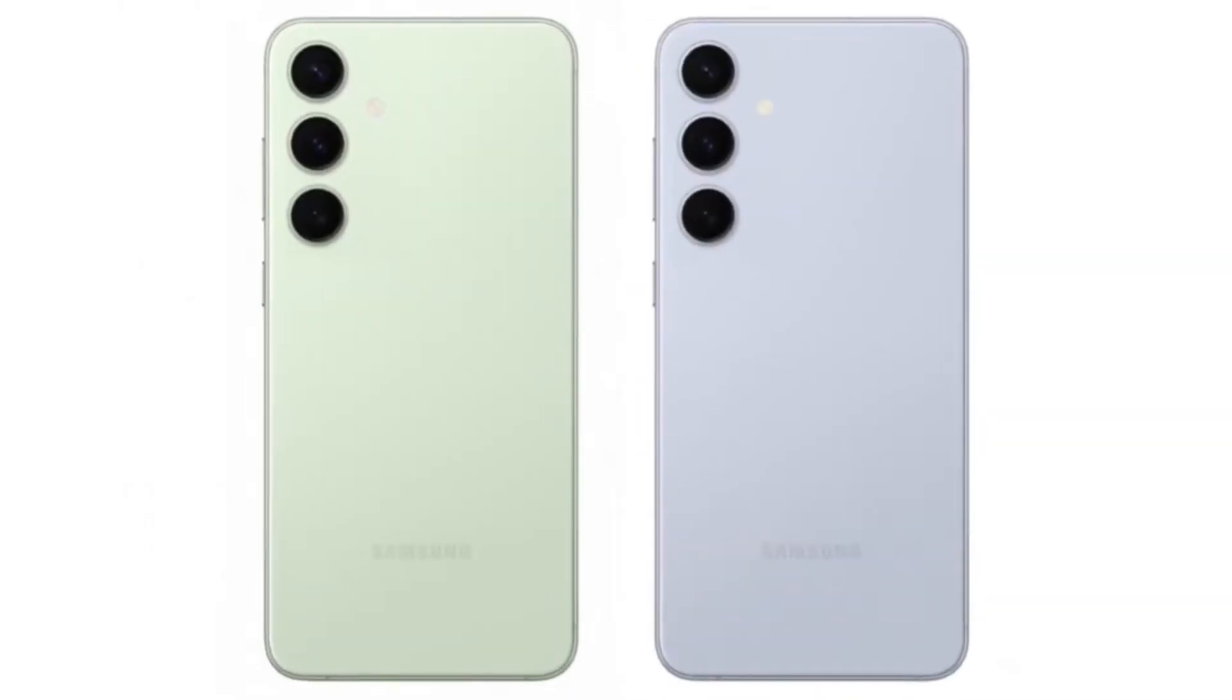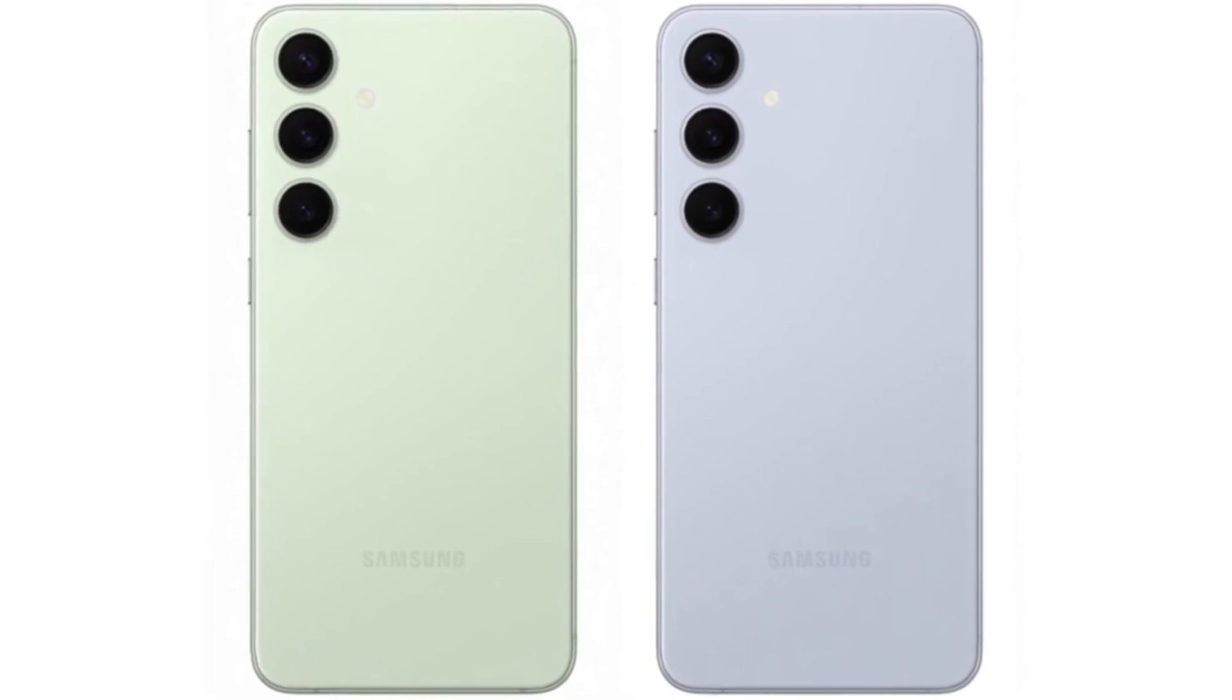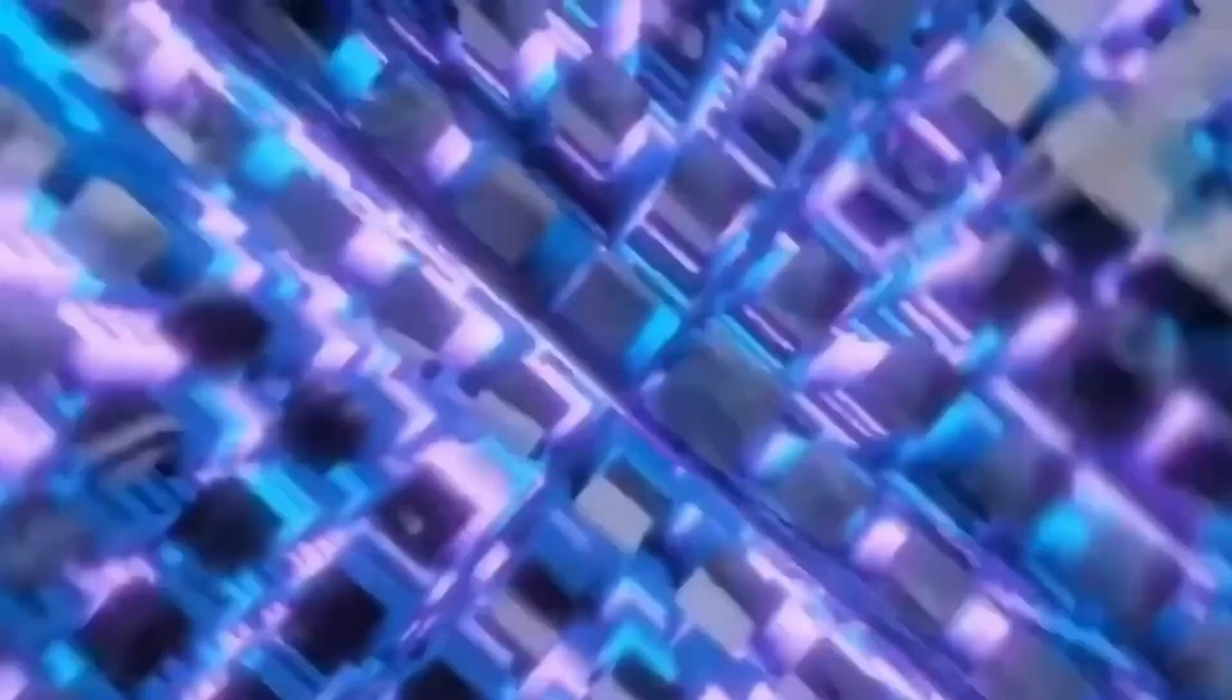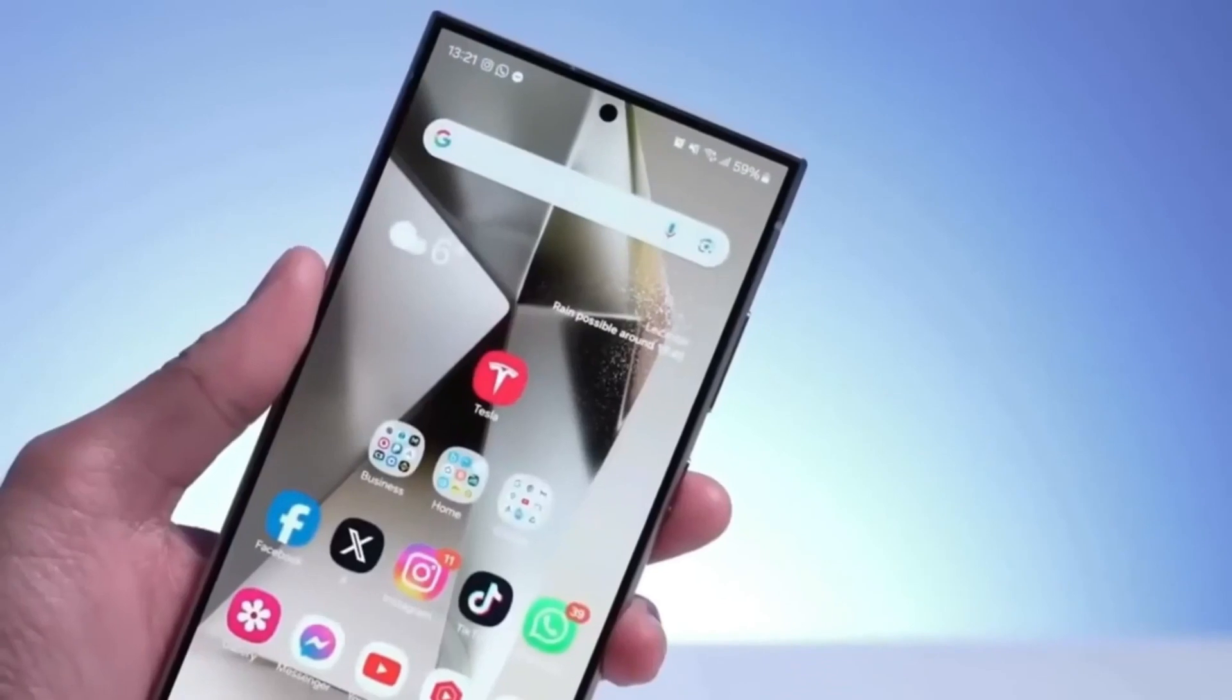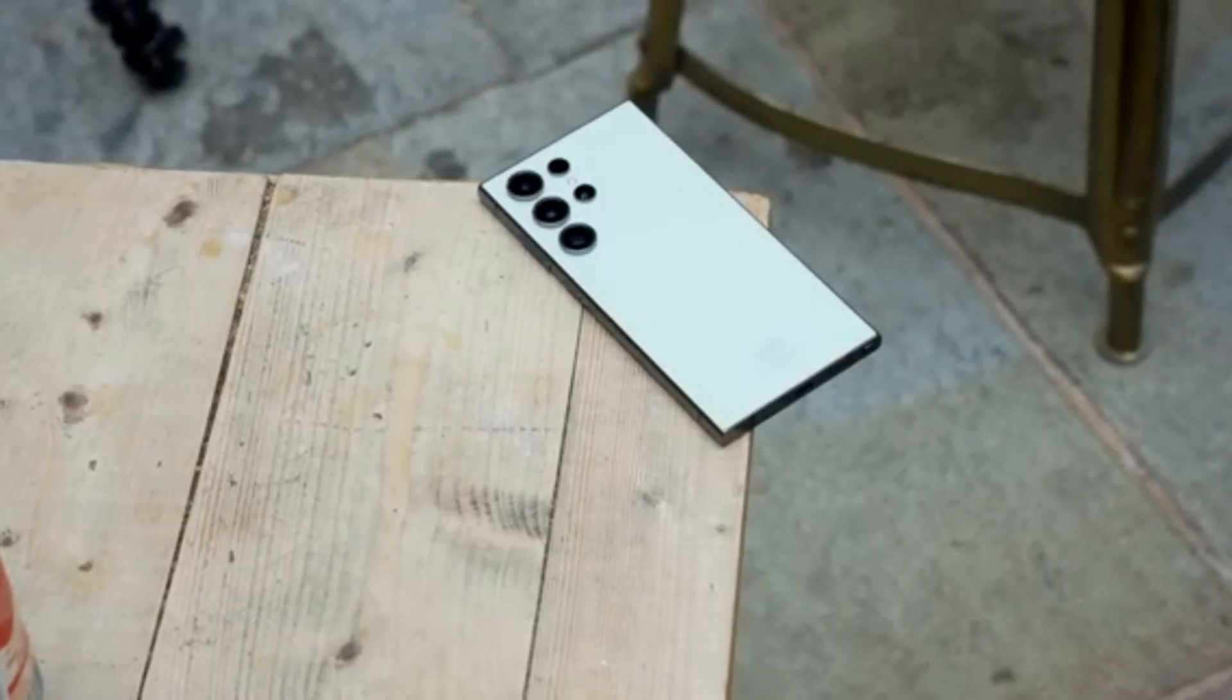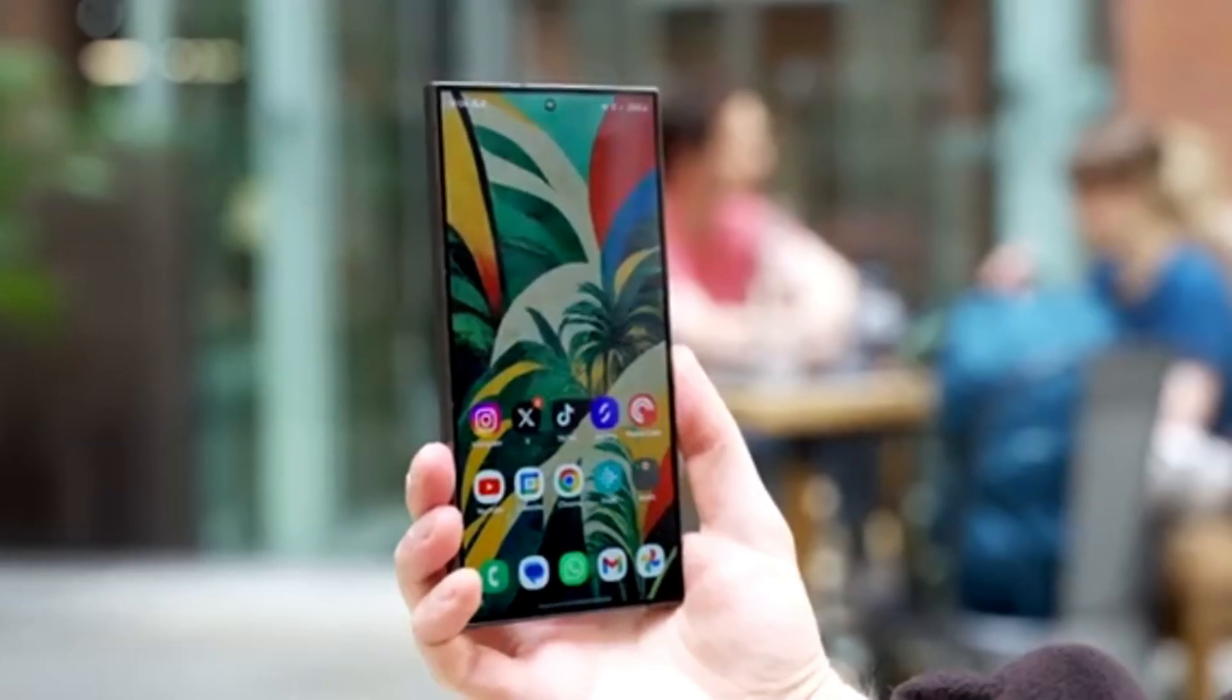The Ultra models are where Samsung's camera innovation truly shines, and this year is no different. Leaks suggest this phone might feature an Ultra camera, possibly the 200 megapixel sensor from the S24 Ultra.